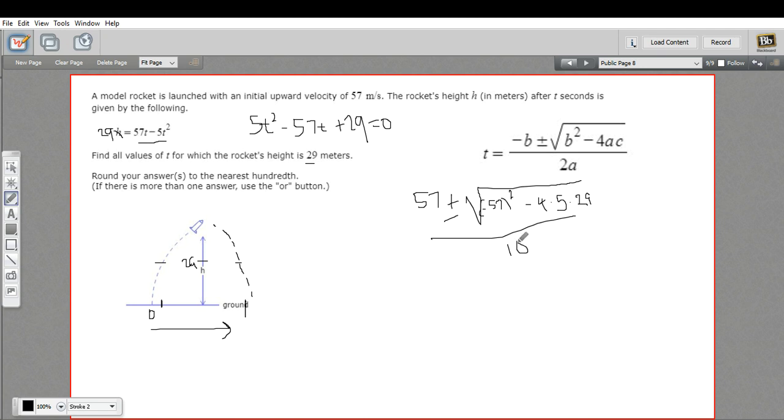So let me figure out what the discriminant is here. 57 times 57, so that's 3,249. And then we've got 4 times 5 times 29. That's 580. So let's subtract that from the 3,249. It looks like I'm getting, you may want to check my math here, but I'm getting 2,669. And that's over 10.